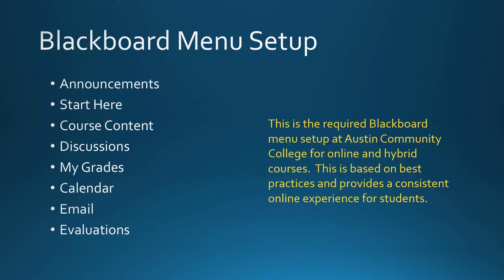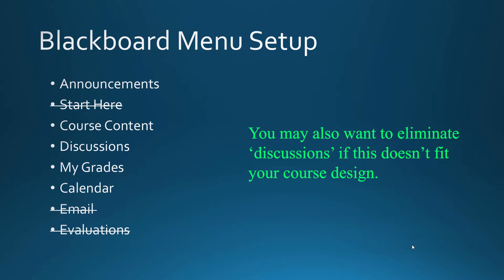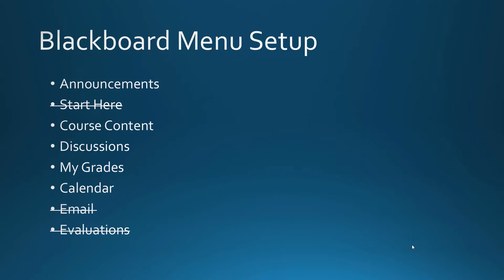At this time you're not trying to build an entire online course, so we're going to streamline this a little bit. We're going to remove the start here, the email, and the evaluations. The start here section is meant to be an orientation for students in a new course, but you're creating this course halfway through, so they've already been oriented. We're also eliminating email since you're likely communicating through your school email already, and evaluations are for online and hybrid courses.